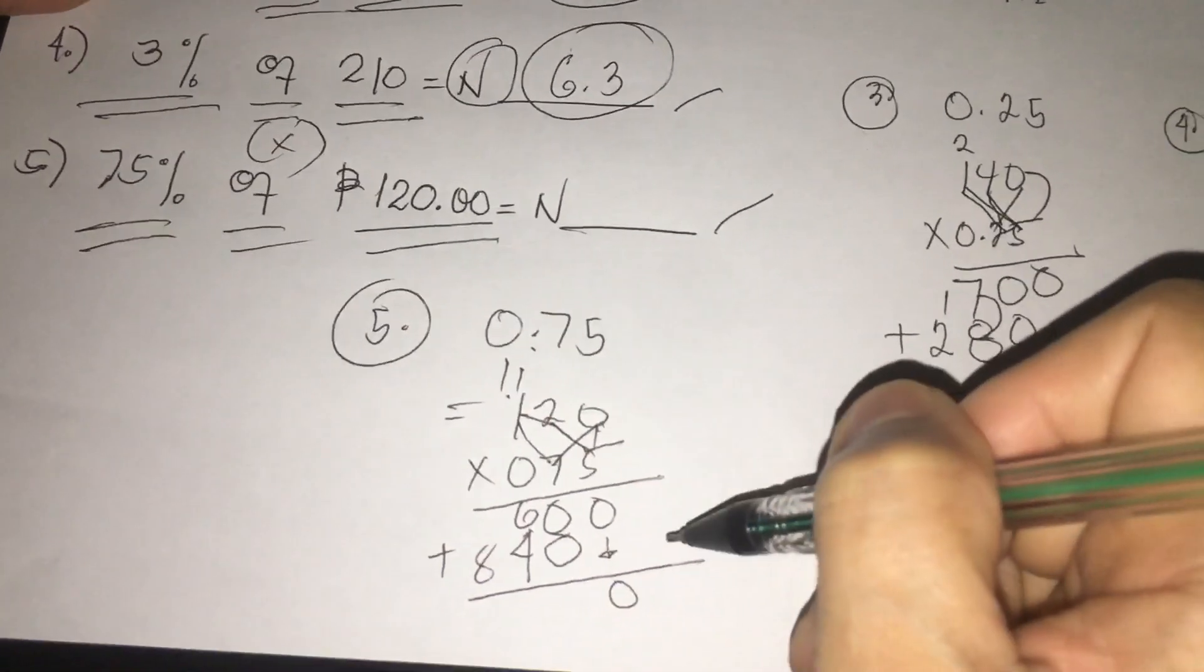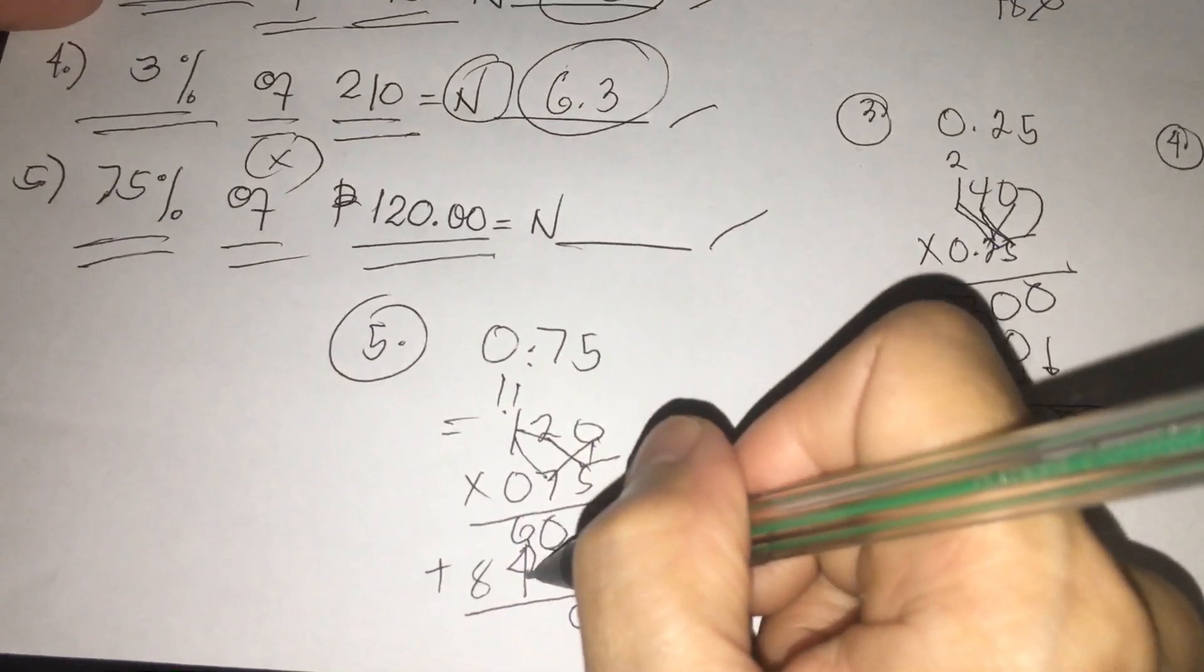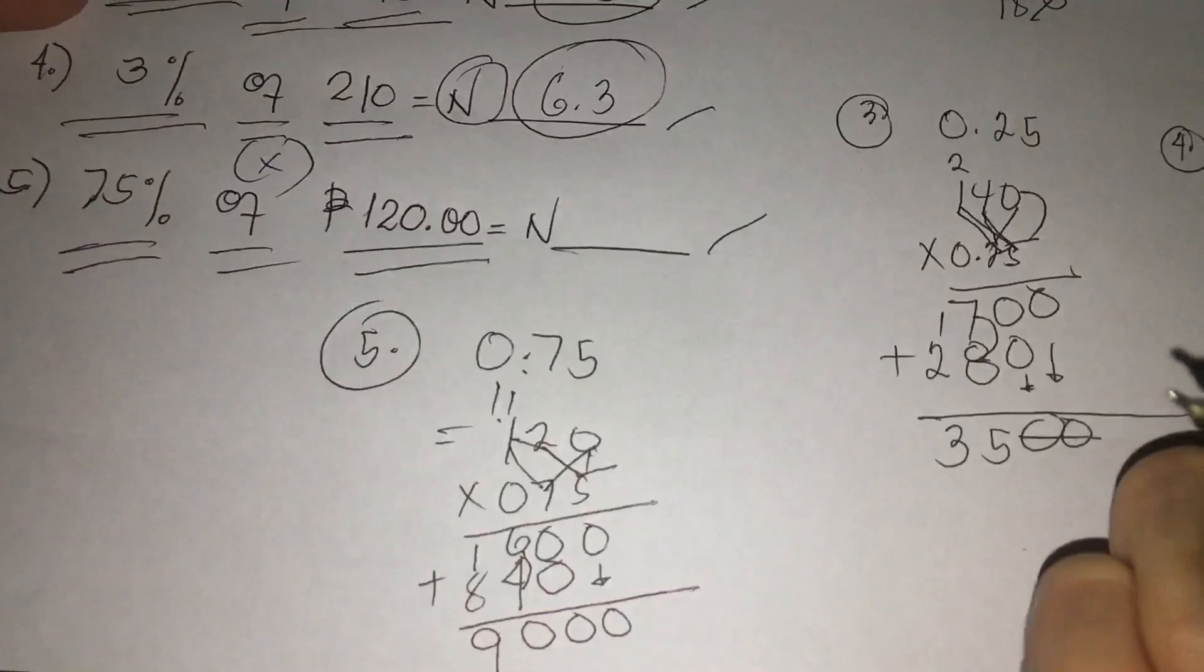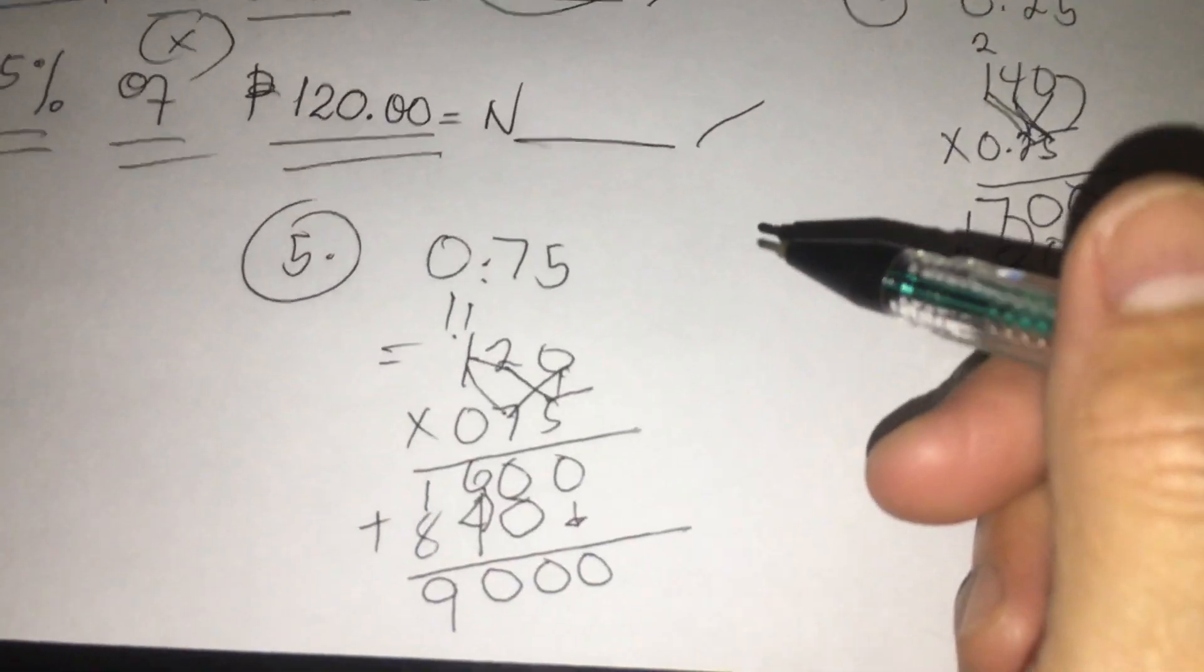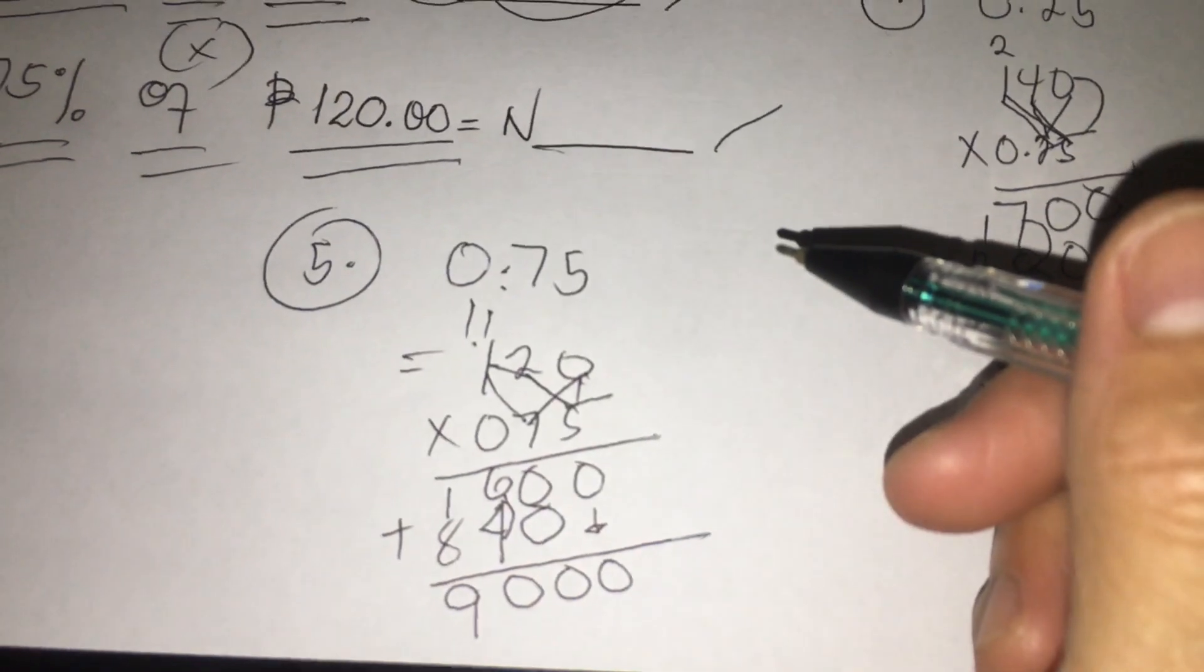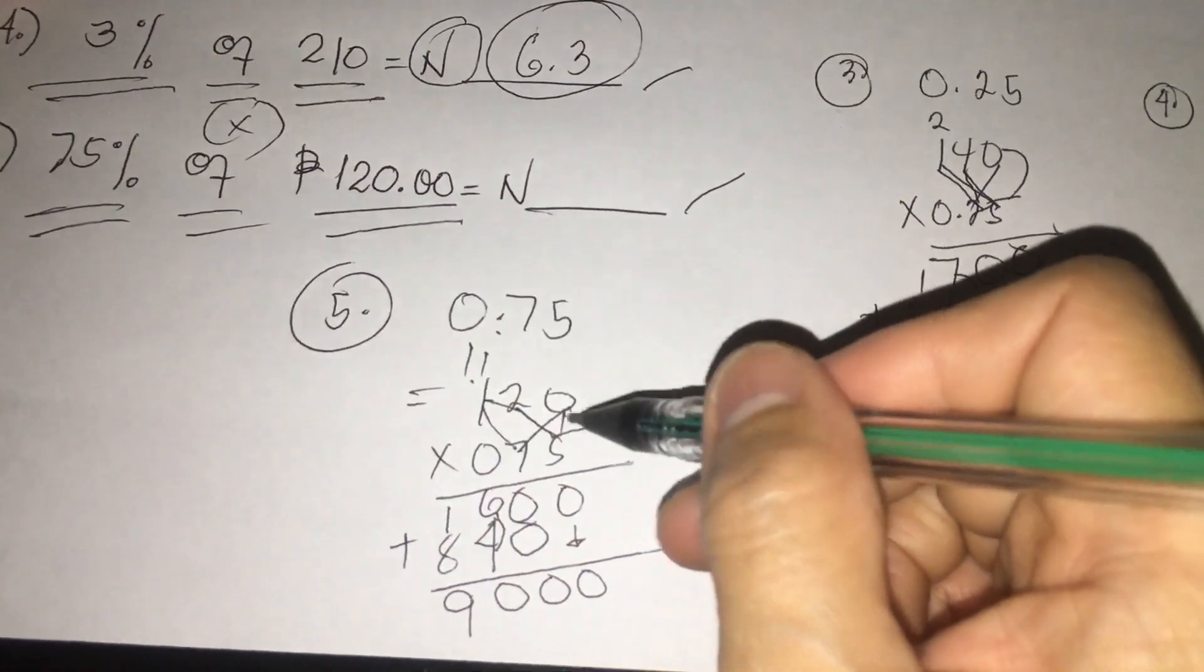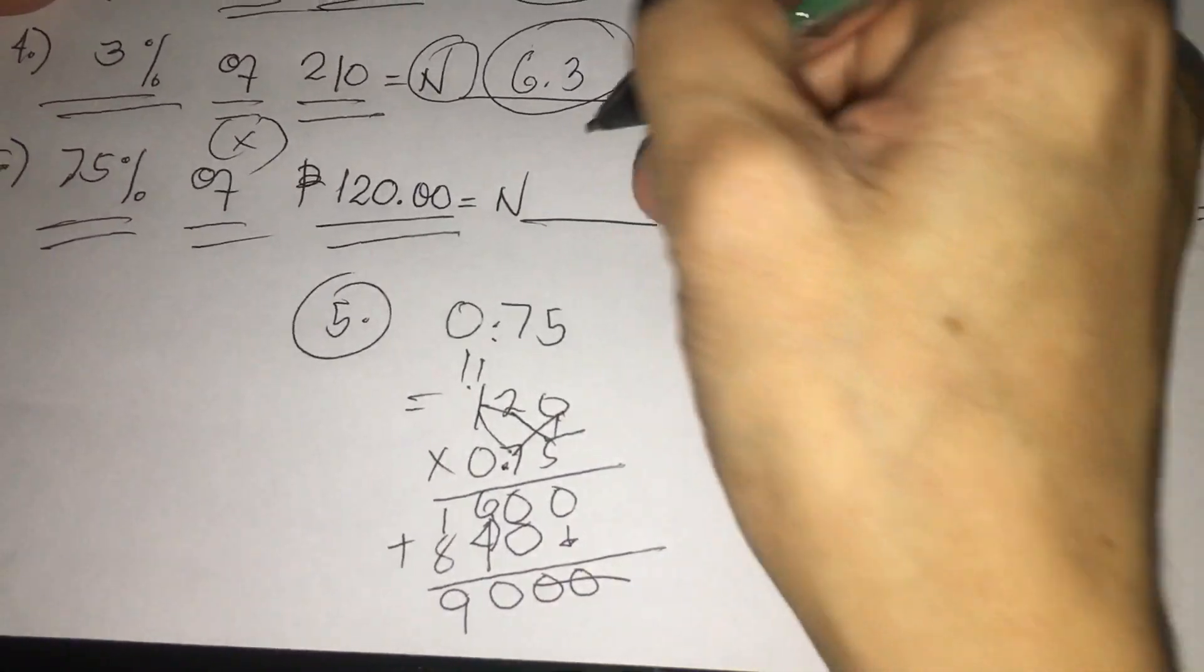Bring down 0, next another 0, plus 6 and 4 we have 10, regroup 1, we have 9. Let's count the decimal point for our number: 0.75, 1, 2, 1, 2. So we have 90.